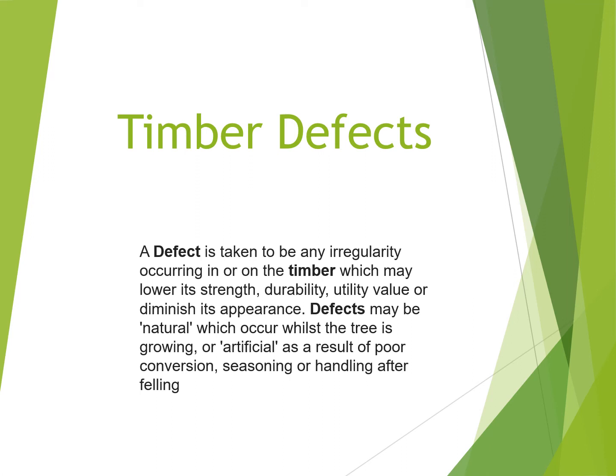Hi all. Having already looked at timber conversion, which is turning it from a tree into planks, and having already looked at timber seasoning, which is turning it from planks into dried wood that we can use, we now have to look at the defects that can occur because of those two processes — getting it from a tree to the plank. If either process is done incorrectly, we can get either naturally occurring defects or artificially occurring defects in the wood.